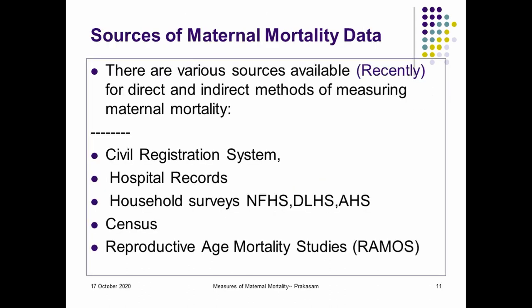What are the sources available? There are direct and indirect sources. The civil registration system keeps records according to the international classification of cause of death, and hospital records are maintained by hospitals — these are the two direct sources. Household surveys, census, and reproductive age mortality studies provide indirect measures, which will be discussed in the coming sections.